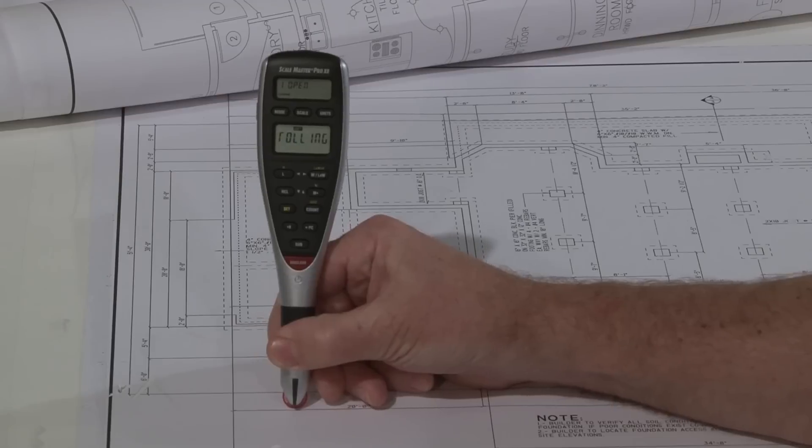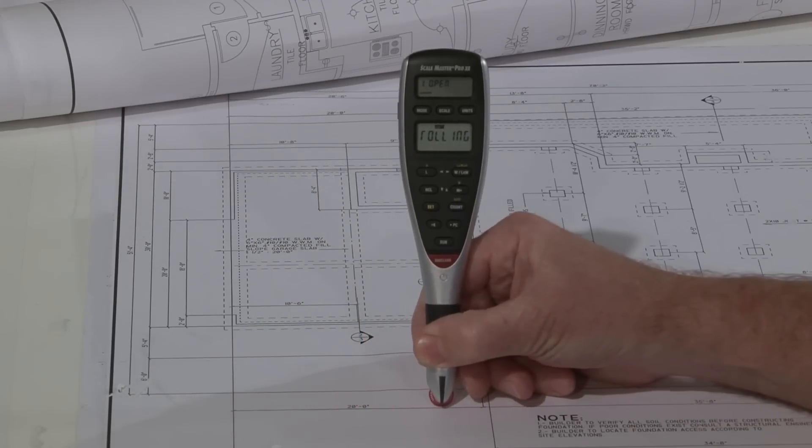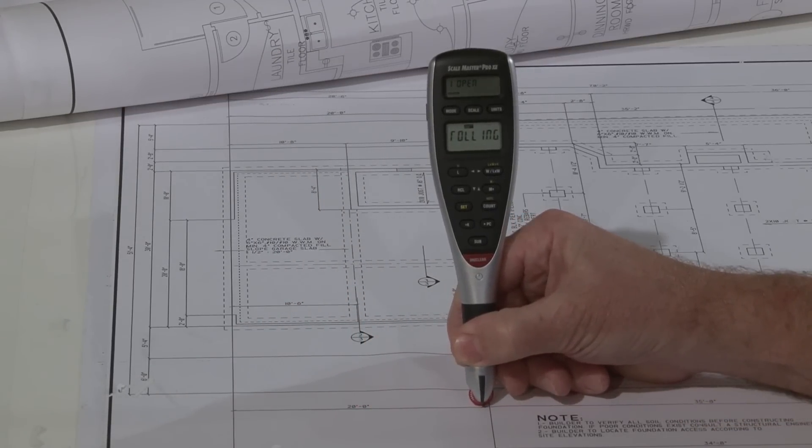Just roll along that line and stop at this hash mark right there.